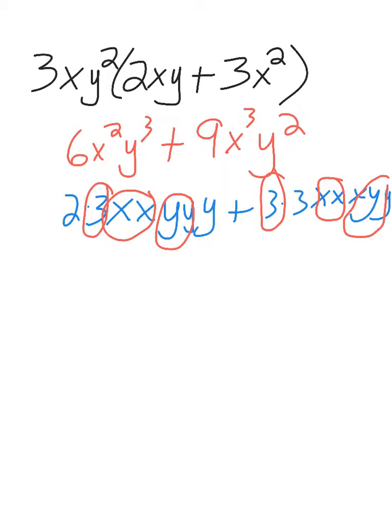So on the outside, I write whatever was in common. That's called the GCF. So I have 3x squared, y squared.